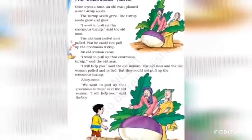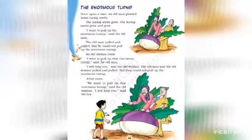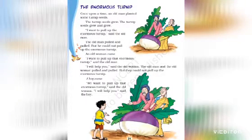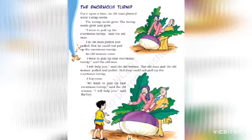Now it's time to read the lesson. I will read the full lesson and afterwards explain the story. 'The Enormous Turnip.' Once upon a time, an old man planted some turnip seeds. The turnip seeds grew and grew. 'I want to pull up the enormous turnip,' said the old man. The old man pulled and pulled, but he could not pull up the enormous turnip. An old woman came. 'I want to pull up that enormous turnip,' said the old man. 'I will help you,' said the old woman.